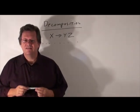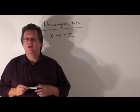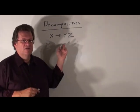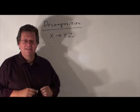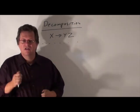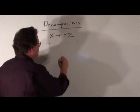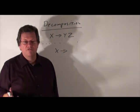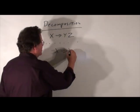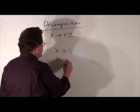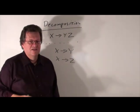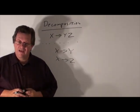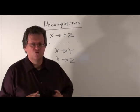The last inference rule I want to talk about is decomposition. It works the opposite of the union inference rule. Here on the board, you see I have X function determines YZ, and we'll assume that's in F closure. For the decomposition, all we do is keep the left-hand side and take out some subset of the right-hand side. So we'd say X function determines Y, or X function determines Z. Here we've applied decomposition to come up with two other functional dependencies. This is our set of inference rules.